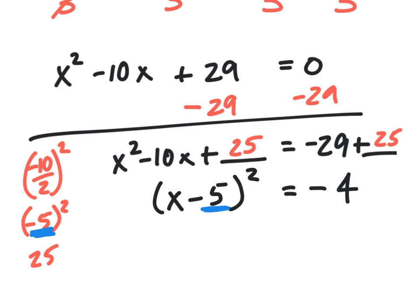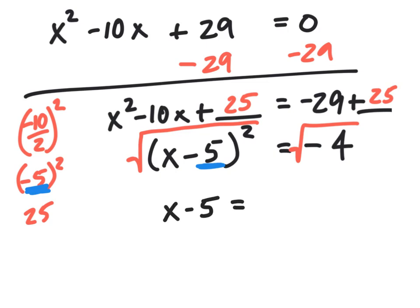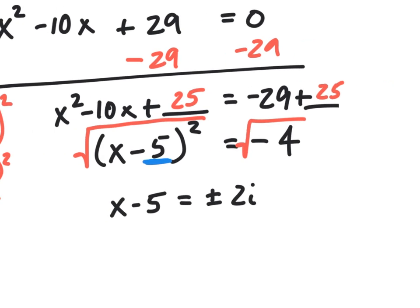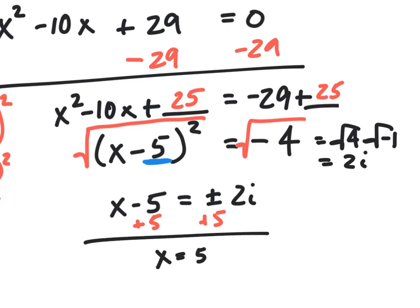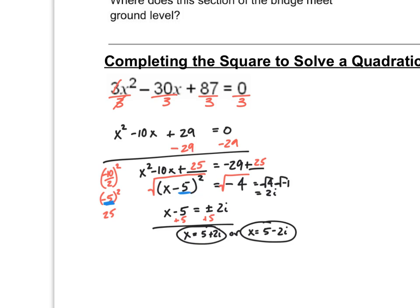Now x squared minus 10x plus 25 is a perfect square trinomial, factoring to x minus five quantity squared equals negative four. Taking the square root of both sides gives x minus five equals plus or minus two i, since the square root of negative four equals two i. Adding five to both sides gives x equals five plus two i, or x equals five minus two i. We get complex solutions here, and that's okay. The only difference from before was ensuring the leading coefficient is one.